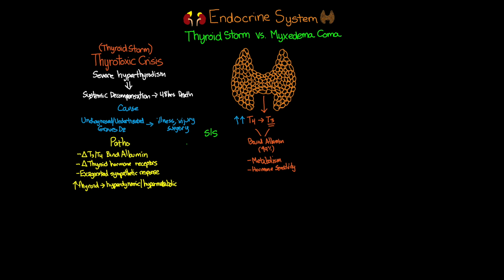The signs and symptoms we'd expect to see in thyroid storm are a result of this hyperdynamic, hypermetabolic state and are really characterized by a high fever — which can be greater than 104 degrees — as well as tachycardia, palpitations, arrhythmias, altered respirations, tremors, delirium, or even stupor and coma.